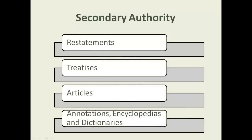Secondary authority consists of commentary about the law written by law professors and expert practitioners. It exists in degrees of importance or levels of persuasiveness. It is always persuasive, but the degree of persuasiveness changes depending on the resource, the author, and the reason why you are citing to it. You are not always able to cite to secondary authority in your briefs, simply because it is not persuasive enough. It's more of a research tool.